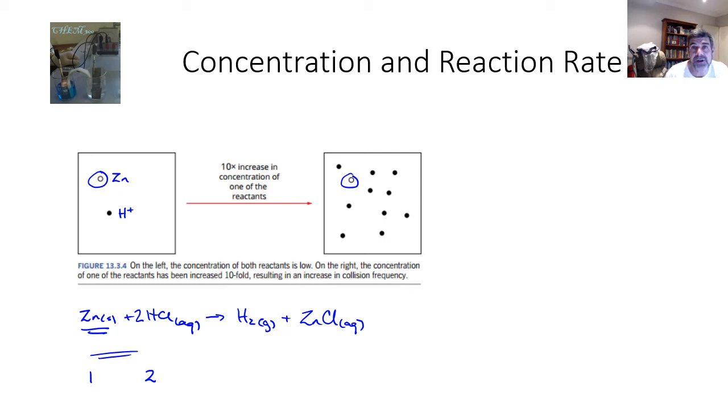We can increase the chance of this happening simply by having more H plus ions. The chances of these H plus ions actually interacting with a zinc atom is much higher. This is how increased concentration works. As the concentration of one of the reactants increases, the chances of collisions become more likely, and therefore an increase in the concentration of at least one of the reactants is equivalent to an increase in the reaction rate.